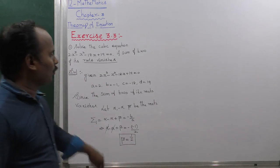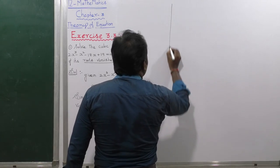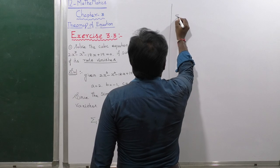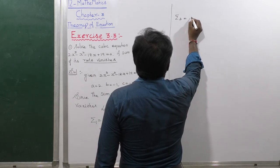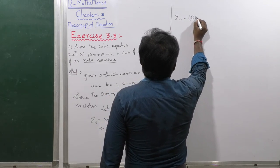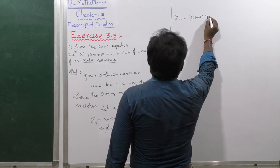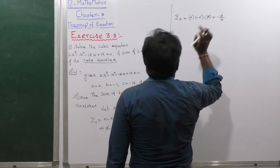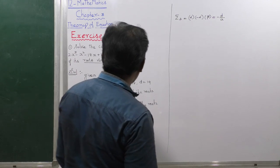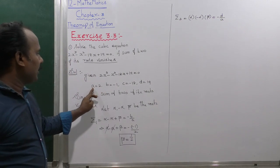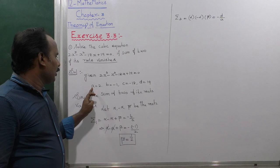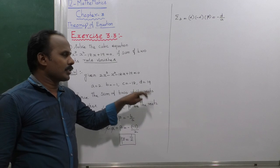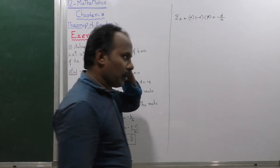Next, to find alpha, we don't need summation 2. We directly use summation 3: alpha × (-alpha) × beta = -d/a. In Vieta's formulas, the signs alternate: summation 1 is -b/a, summation 2 is +c/a, summation 3 is -d/a.